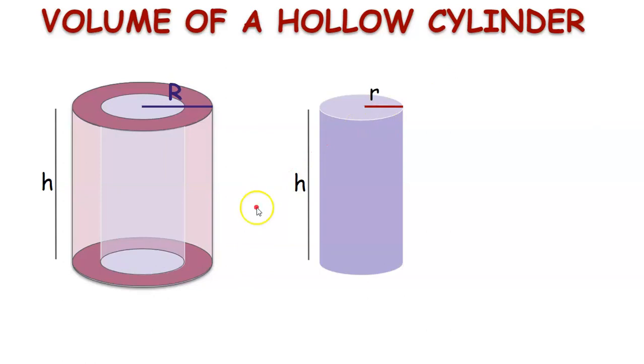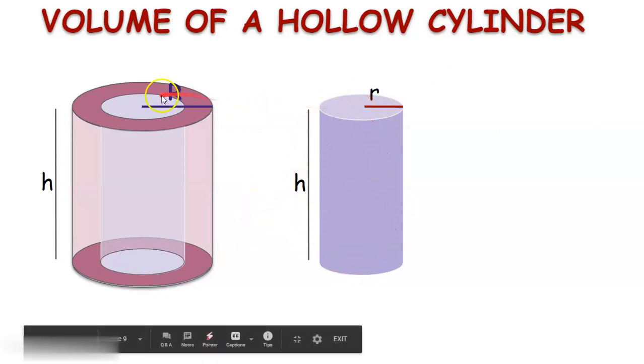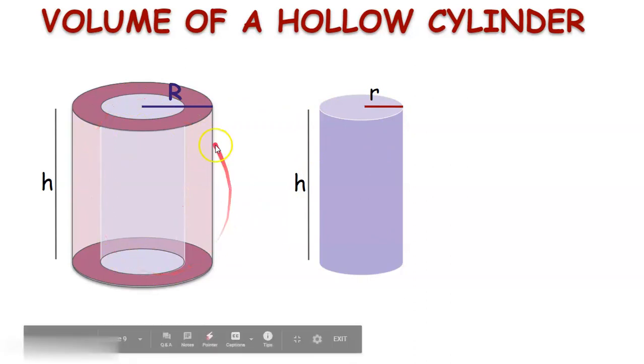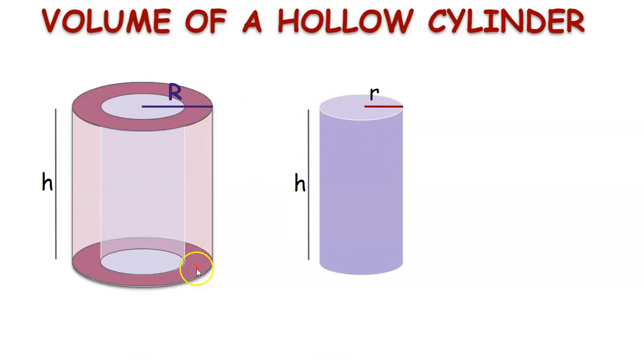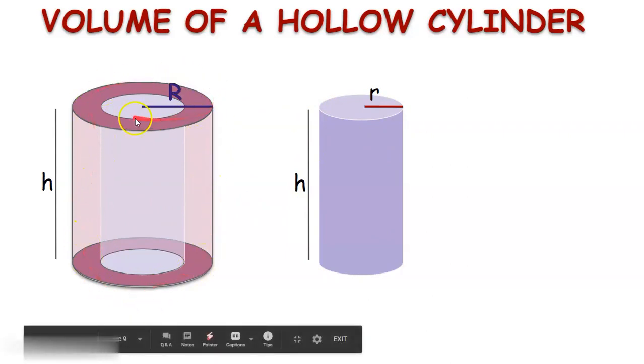Here, we observe that by removing this small cylinder, a hollow cylinder is formed. Let us find the volume of this hollow cylinder, which is nothing but the material with which this hollow cylinder is made up of.